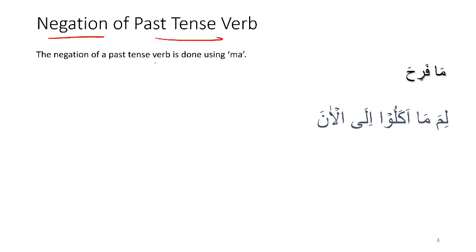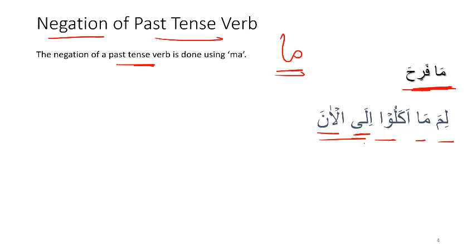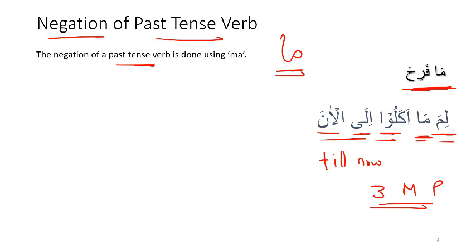Moving now to the negation of a past tense verb. We negate a past tense verb using 'Maa.' So 'Fariha' means 'he was happy,' and 'Maa Fariha' means 'he was not happy.' Next, we have 'Lima Maa Akalu Ilal Aan.' 'Ilal Aan' — Ila means 'to or towards' and Al-Aan means 'now,' so Ilal Aan means 'till now.' Akala means 'he ate,' and with the Waw and Alif ending, Akalu is third person masculine plural meaning 'they ate.' Maa Akalu therefore means 'they did not eat,' and Lima means 'why.' The full translation is: 'Why did they not eat till now?'